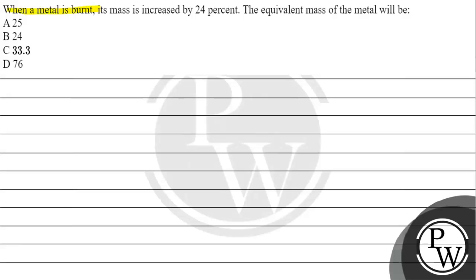The question says when a metal is burned its mass is increased by 24%. The equivalent mass of the metal will be option A 25, option B 24, option C 33.3, or option D 76.